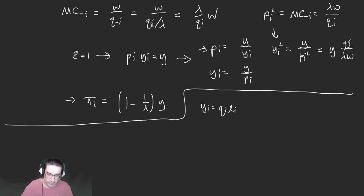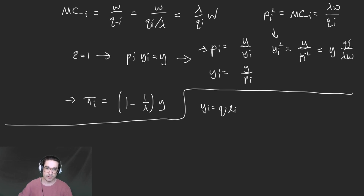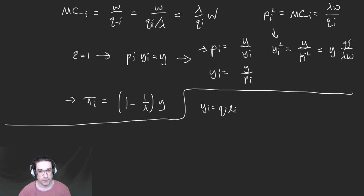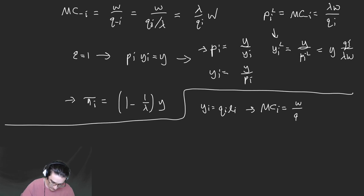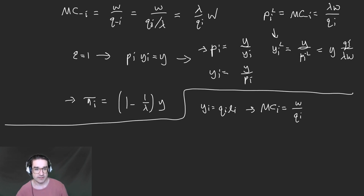Over time, innovations across all product lines lead to overall growth. The marginal cost for a firm i with productivity q_i is w over q_i — you pay wage w and to produce one unit you need one over q_i workers. The follower, who is one step behind, has productivity q_i over lambda, so their marginal cost is lambda times w over q_i.